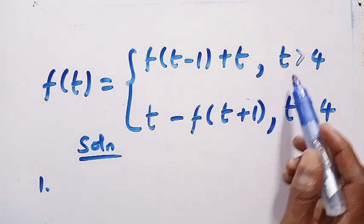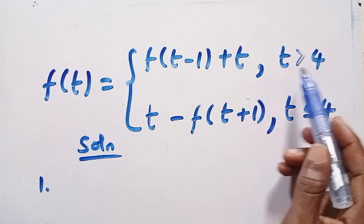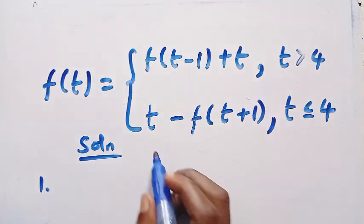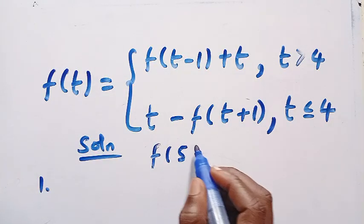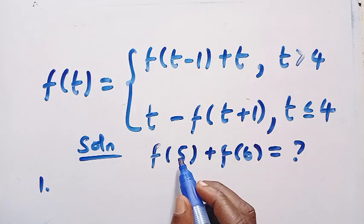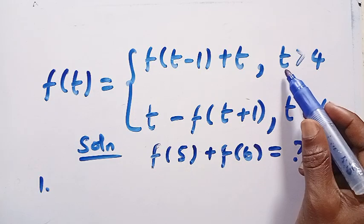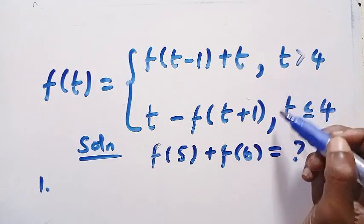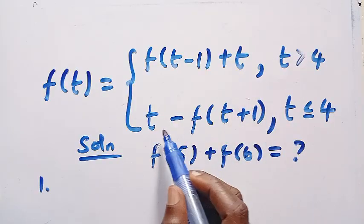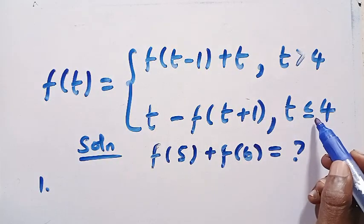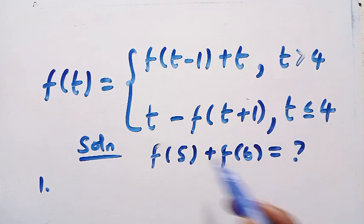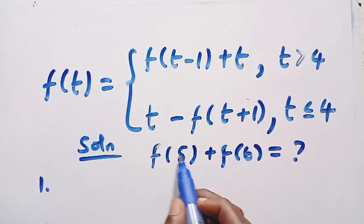For the first condition, t is greater than 4 — that is, the value of t starts from 5, 6, 7 upward. But what we are asked to find is only f(5) plus f(6), so we limit ourselves to only 5 and 6. Since 5 is greater than 4 and 6 is also greater than 4, we apply the first condition. The second condition covers t less than or equal to 4 — that is, values of t equal to 4, 3, 2, and below.